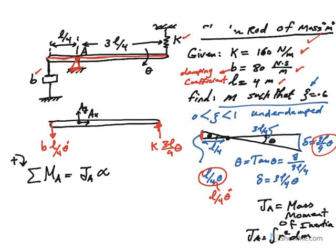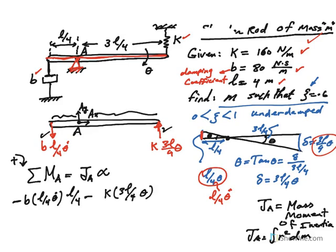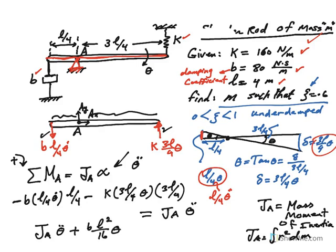J sub A mathematically is the integral of R squared dm. But I'll show you how you can find J sub A in a minute. Always the direction of disturbance is taken as positive. Notice that both of these forces have negative moment about A because they're going counterclockwise. So the moment of the damping force would be B L over 4 theta dot times L over 4, and it's negative. Similarly, the moment of the spring force times this distance, which is 3L over 4, equals J sub A theta double dot. This becomes J sub A theta double dot plus B L squared over 16 theta dot plus 9K L squared over 16 theta equal to 0. So this is the homogeneous differential equation, second order with the theta double dot, theta dot, and theta in it.